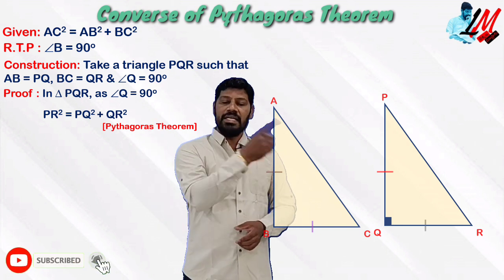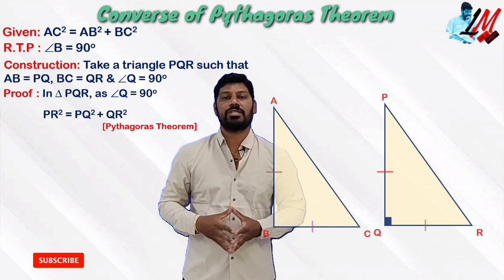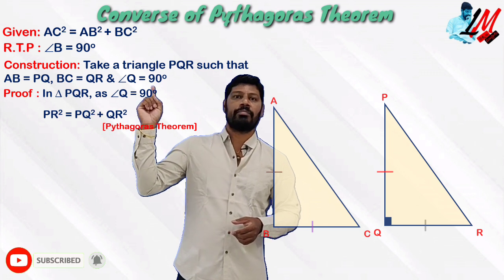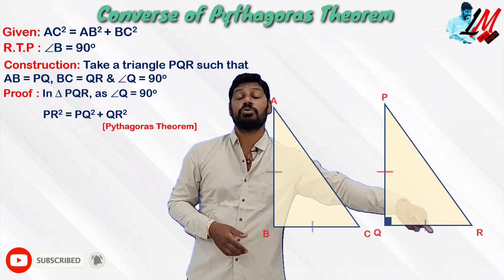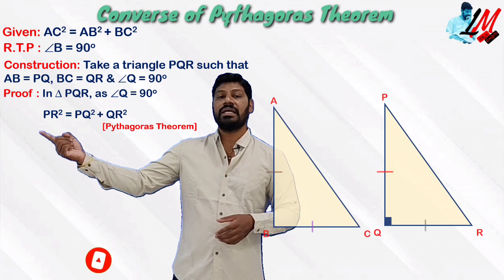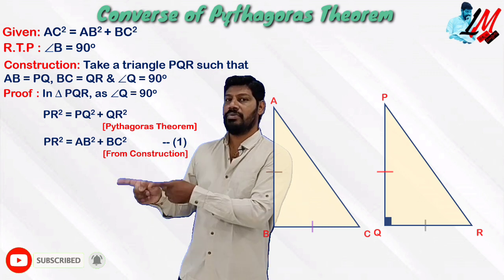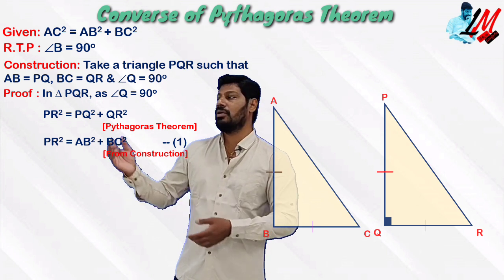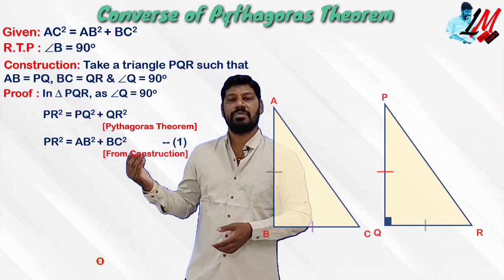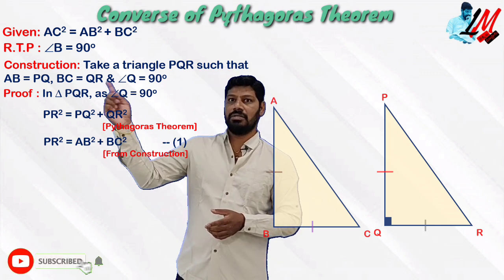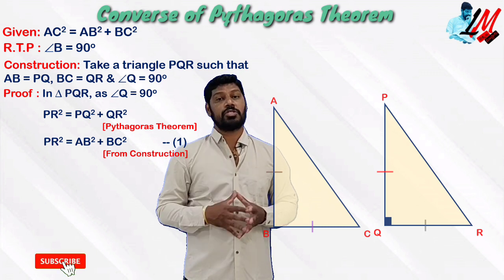In triangle PQR, angle Q is 90 degrees. Applying Pythagoras theorem to this right triangle: PR² = PQ² + QR². Since from construction AB equals PQ and BC equals QR, we substitute: PR² = AB² + BC².